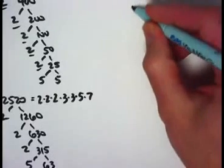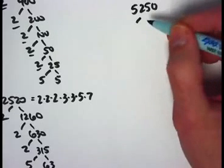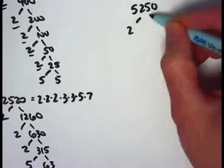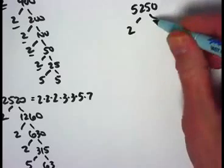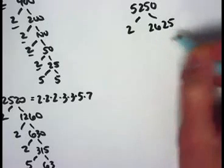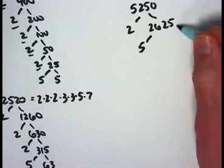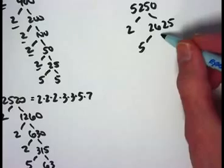Maybe try the next one on your own — pause the video. 5250: try getting the prime factorization of that on your own. If you're back, I'll go through it myself now. It's divisible by 2 since it ends in an even number, and if we divide by 2 we end up with 2625 — no longer divisible by 2, but it is divisible by 5. 5 goes into 2625 — thinking it through, 5 goes into 2400 four hundred eighty times, and 5 into 125 is 25 more, giving 525.